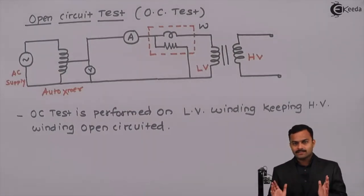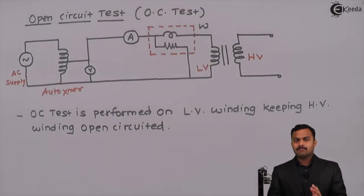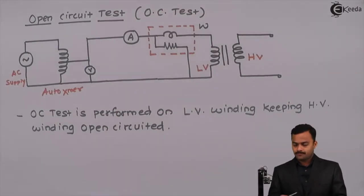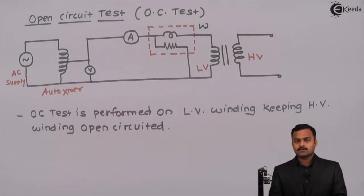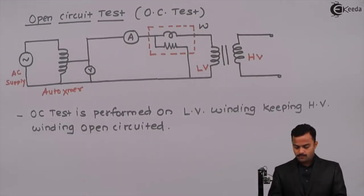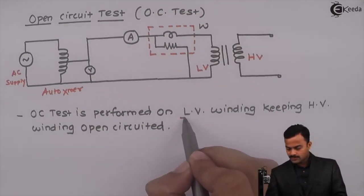Otherwise it is fine — it would give the same results. But because of the restrictions on meters, we perform the open circuit test on the low voltage winding.